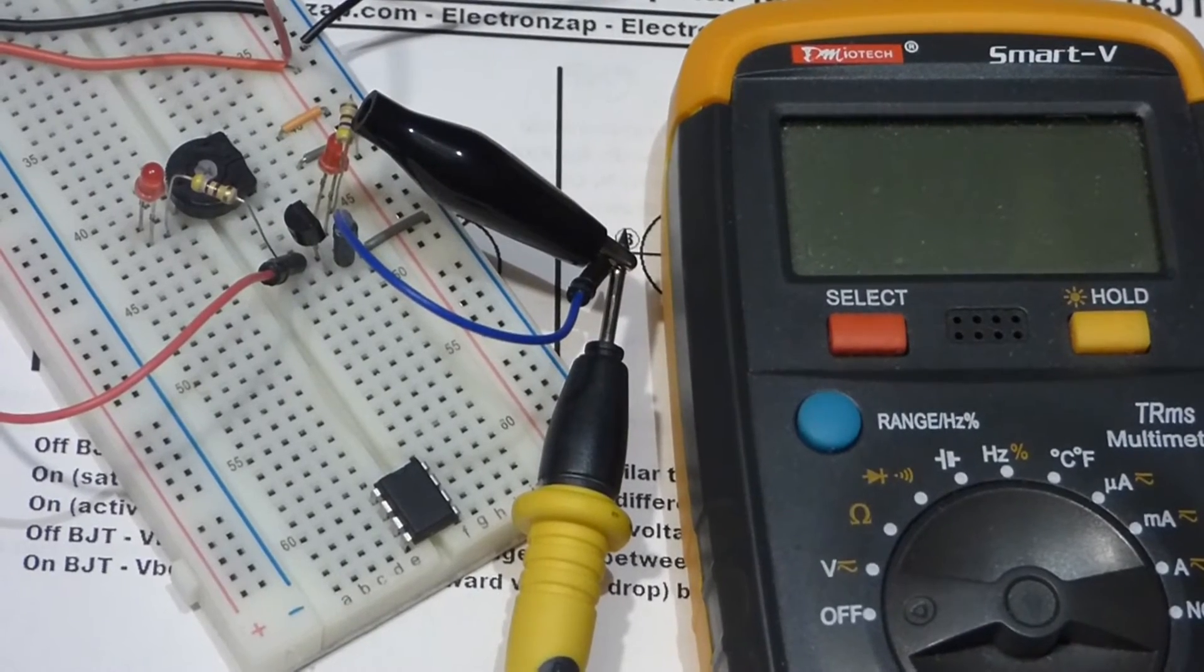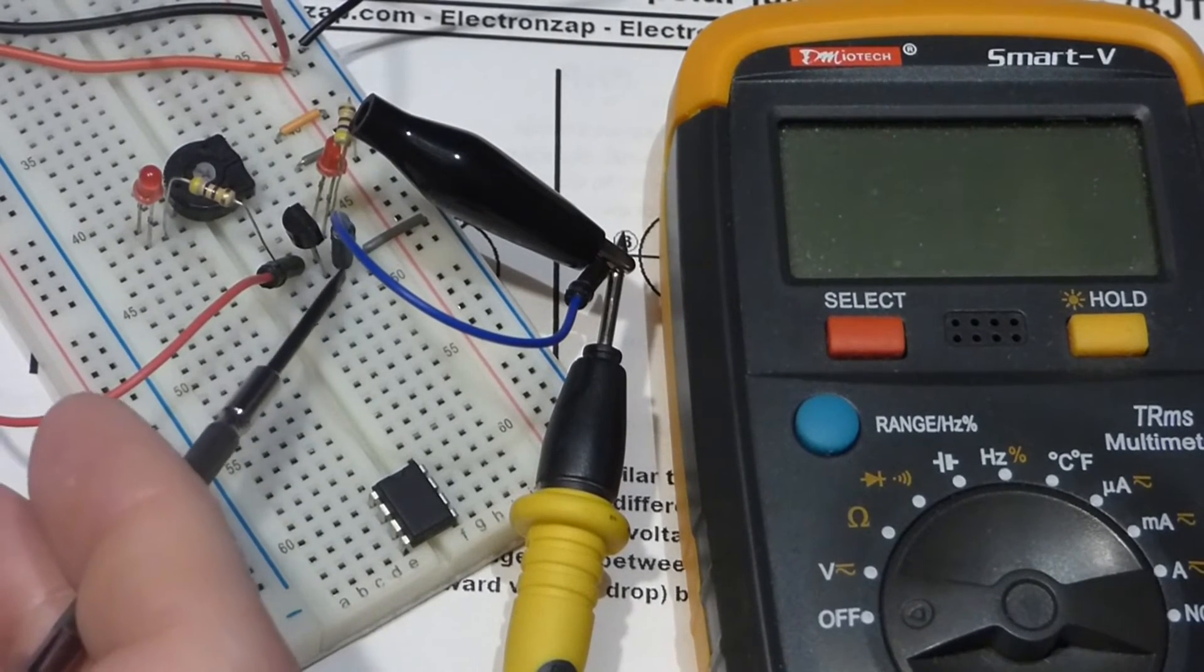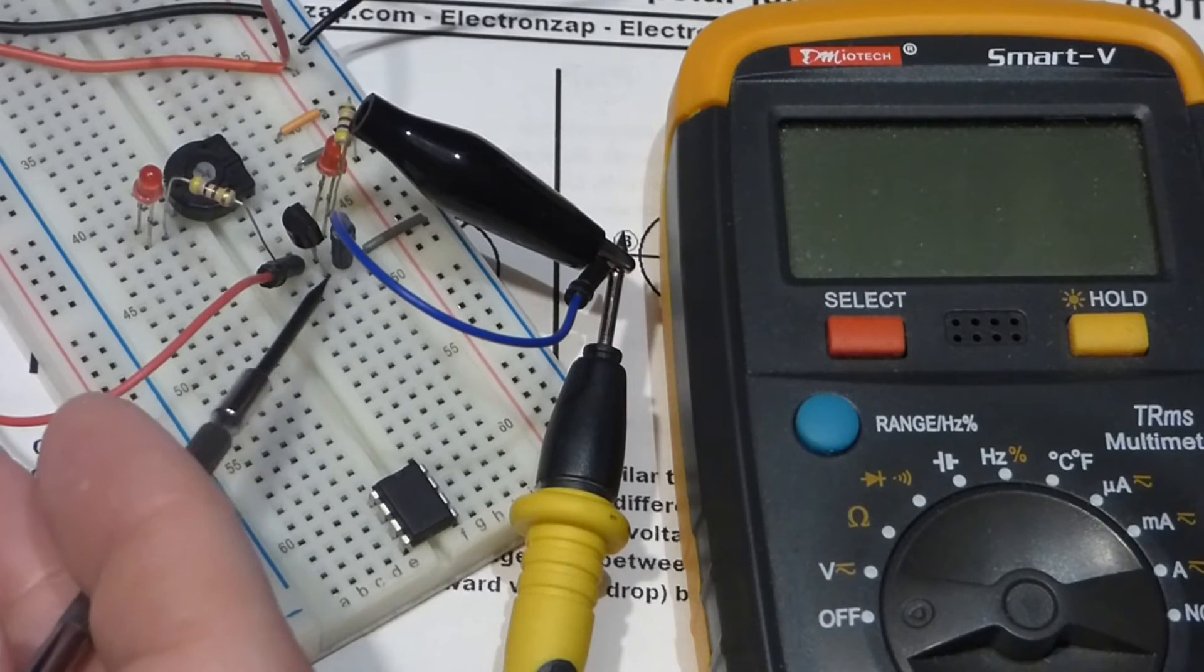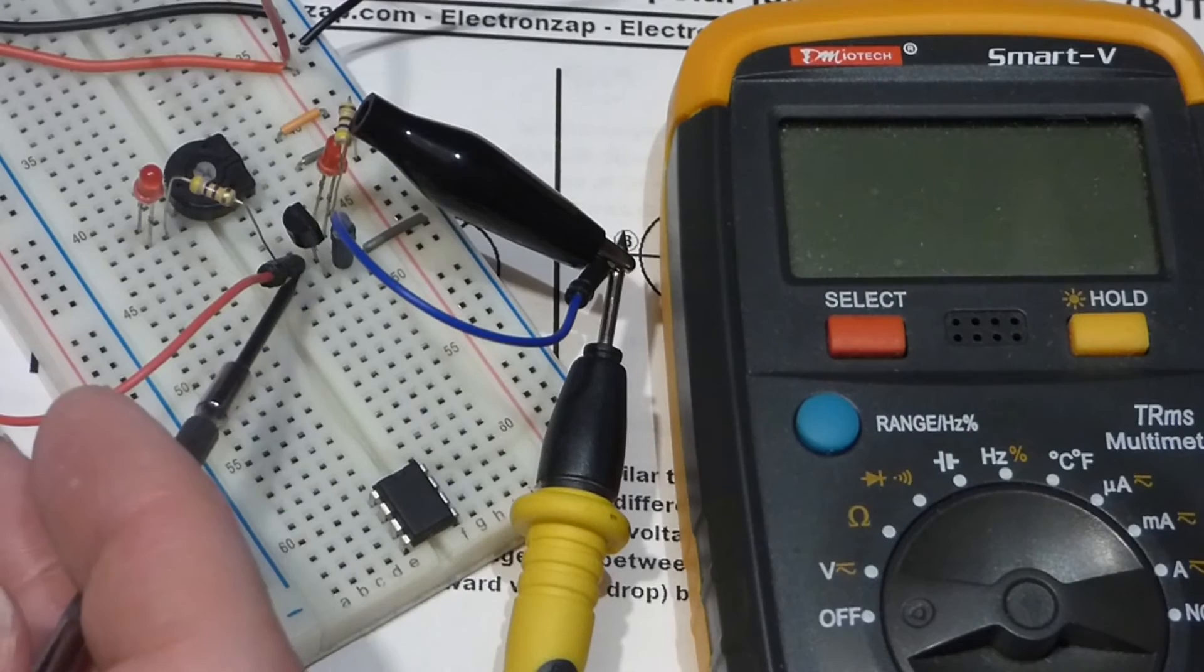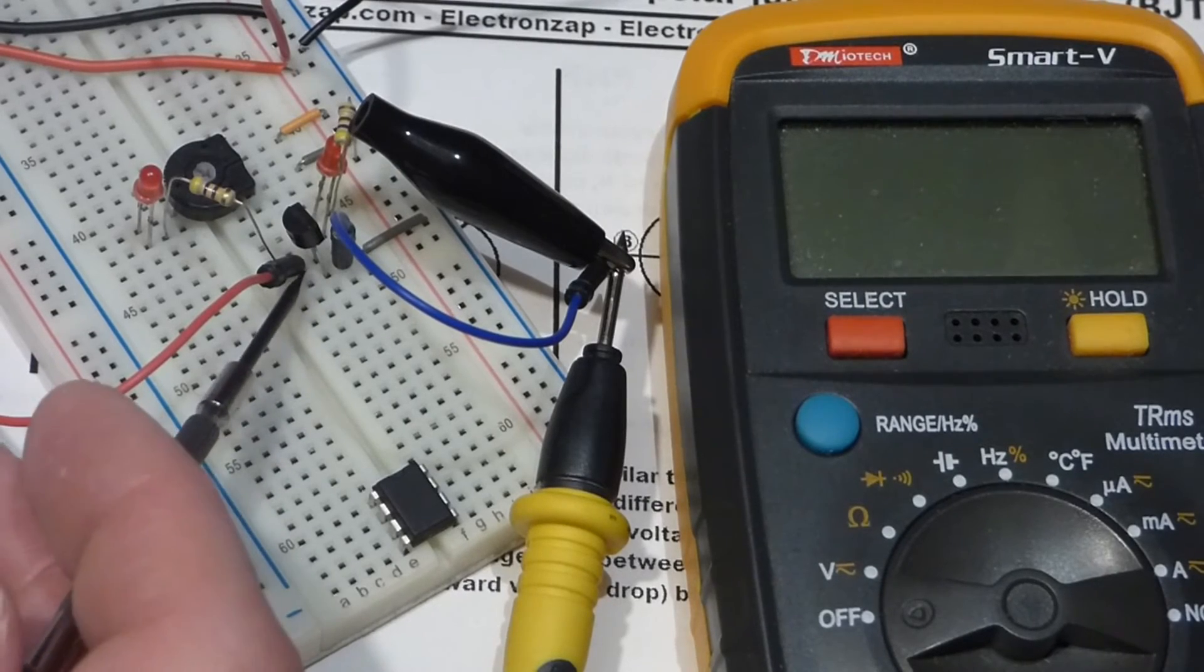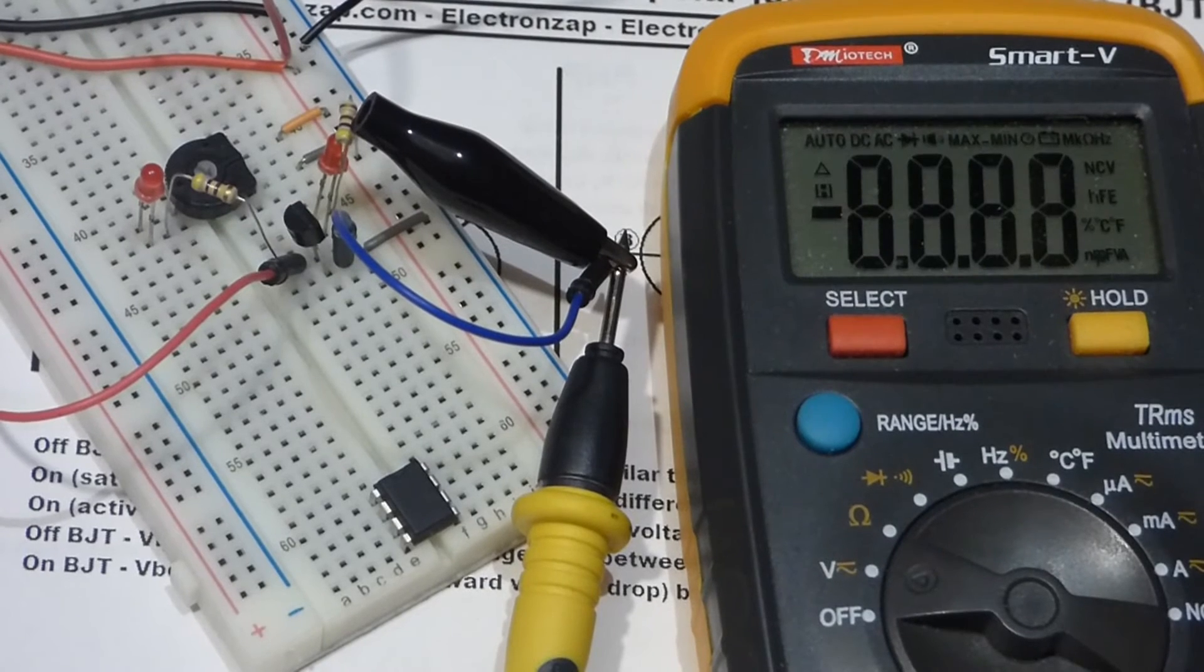So now we're going to look at the base emitter voltage. And so I have the jumper again connected to the emitter, to the black probe. And then the red probe, I have a jumper connected to the base, the middle pin of the transistor. So now we'll turn the multimeter on.